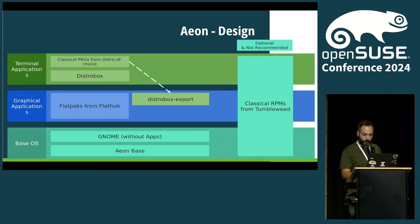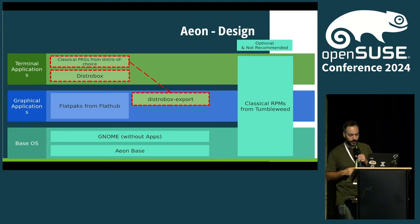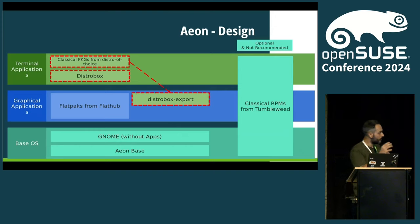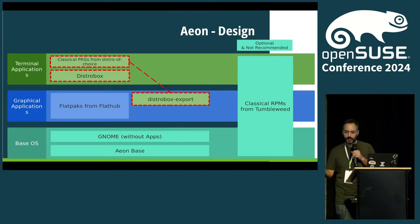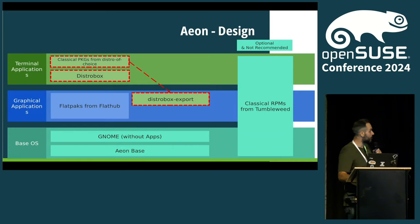For apps that don't actually have a Flatpak, or where the Flatpak is not the best solution, there is still DistroBox export, which we will explore in a bit. It basically lets you have GUI apps highly integrated with your environment even though they are running in a container. We will concentrate on this part of the design today.